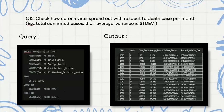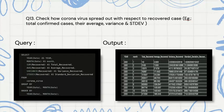Now we are checking a similar query but for the deaths column, which is similar to the previous query. Then we are checking for the recovered cases where we are using the aggregate functions SUM, AVG, VARIANCE, and STDDEV to find the required output.